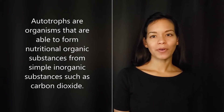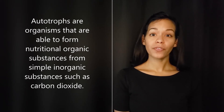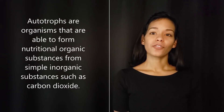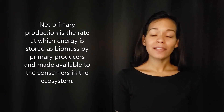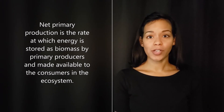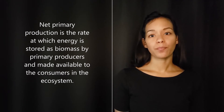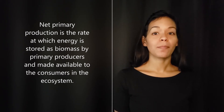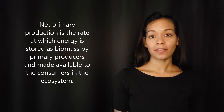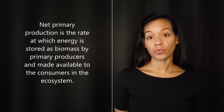The total chemical energy produced by autotrophs is called gross primary production. The energy that remains after respiration is called net primary production, and it is used to generate biomass like leaves, stems, and roots.